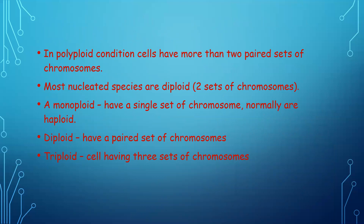In polyploid condition, cells have more than two paired sets of chromosomes. Most nucleated species are diploids. Monoploids are haploids having n number of chromosomes, diploids have 2n chromosomes with paired sets, and triploids have three sets of chromosomes, and so on.